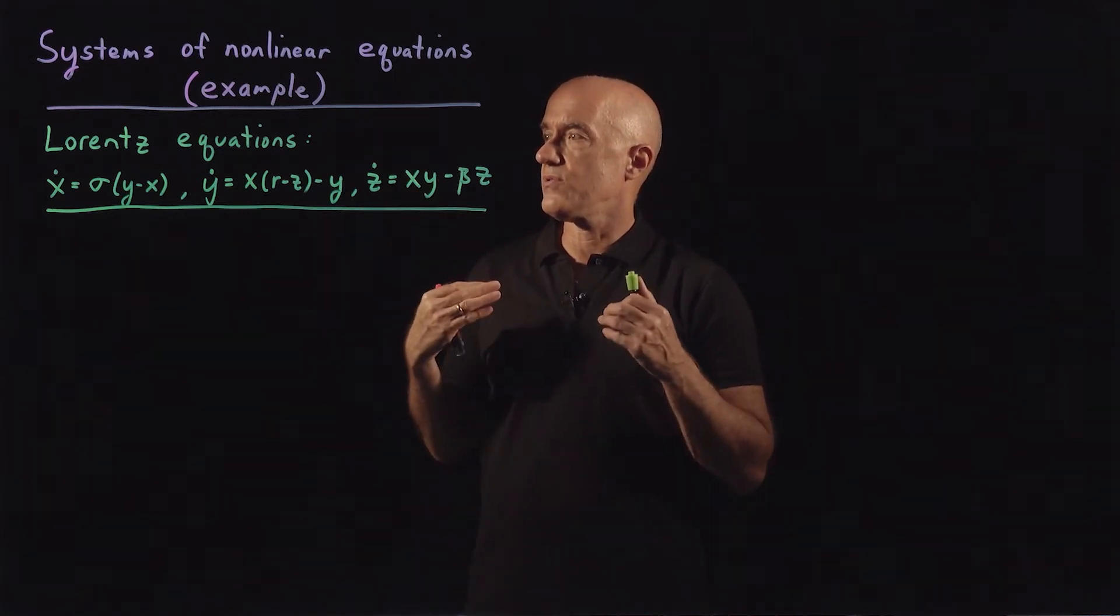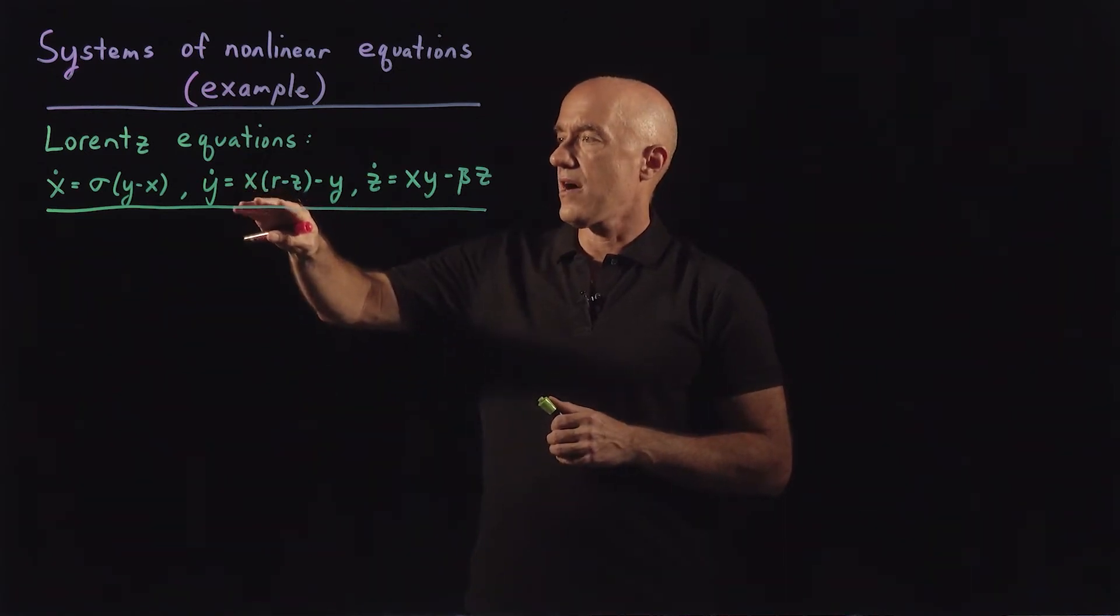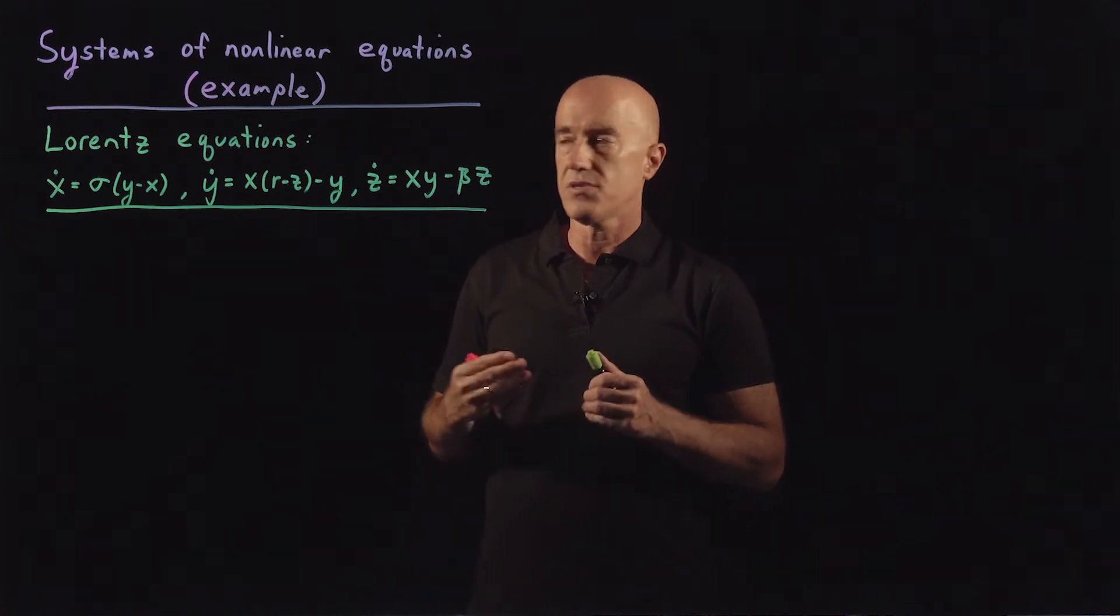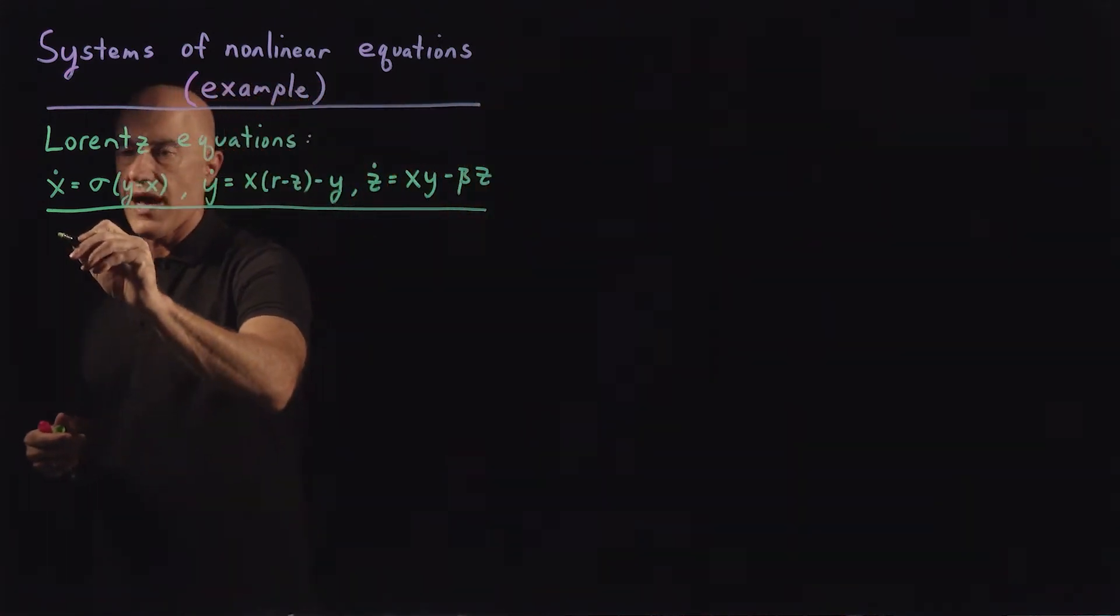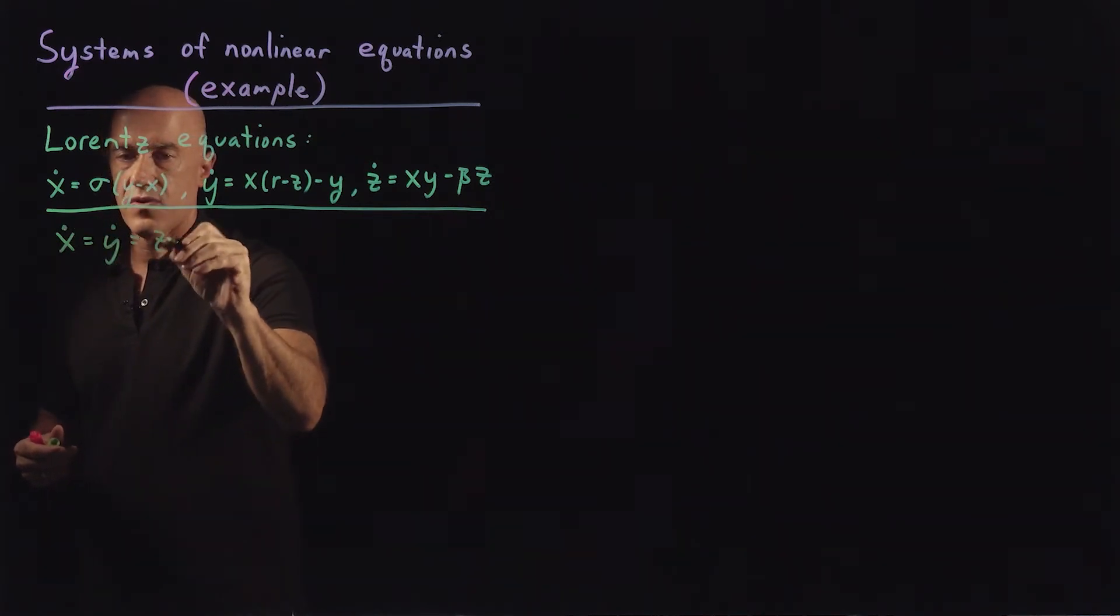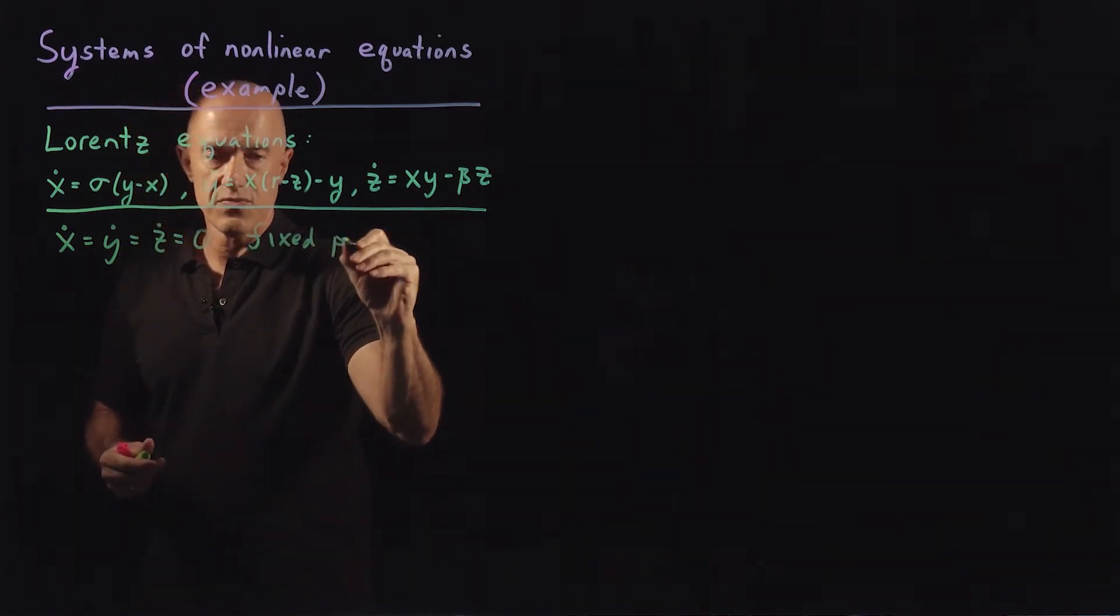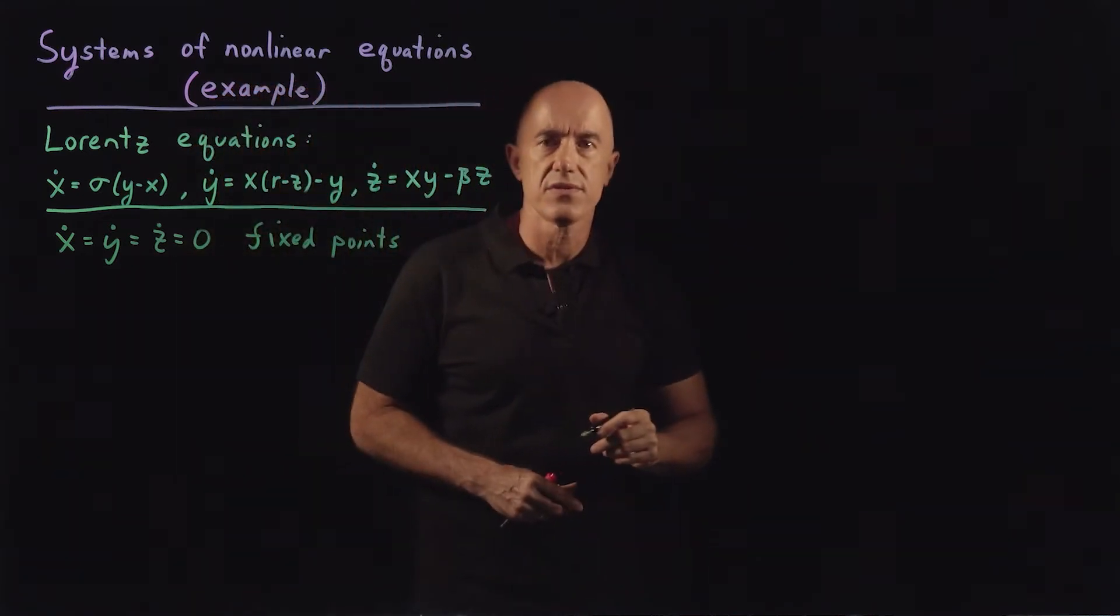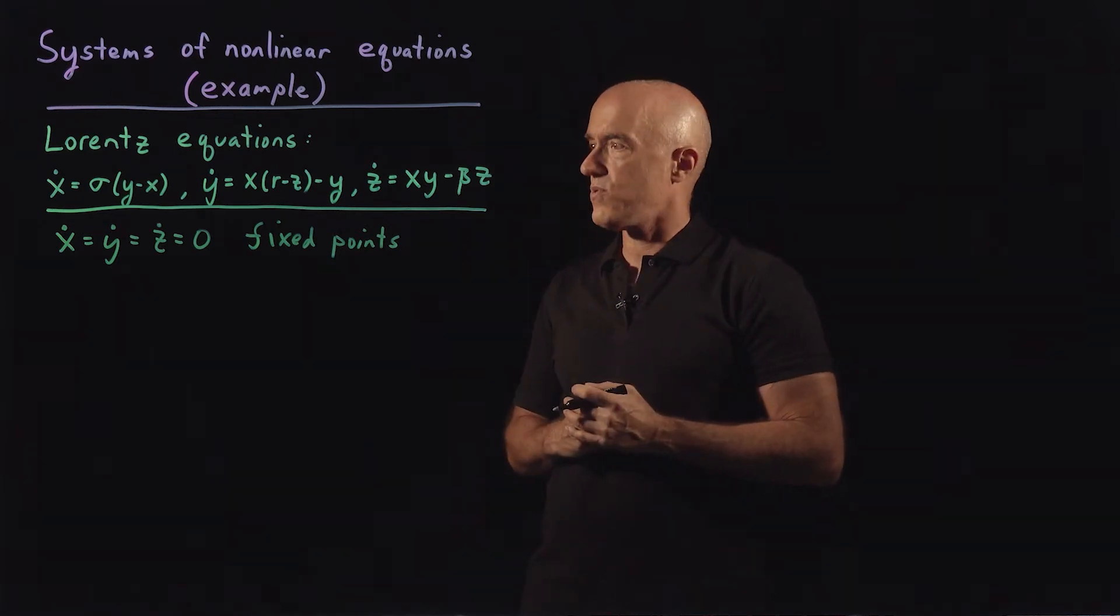So we're going to use Newton's method to find the fixed points of these equations. Those are the values where x dot equals y dot equals z dot equals zero. Those are called fixed points because if you put x, y, and z at those values then the derivatives are zero so they stay there. They don't move.